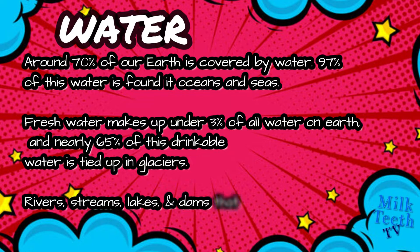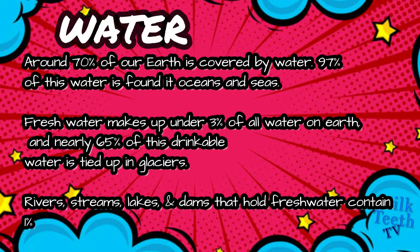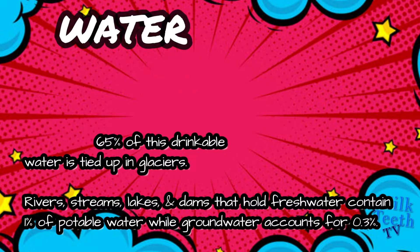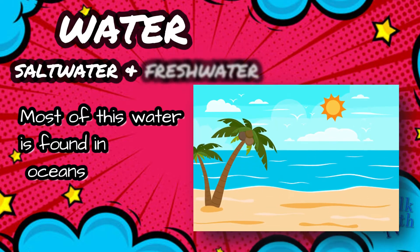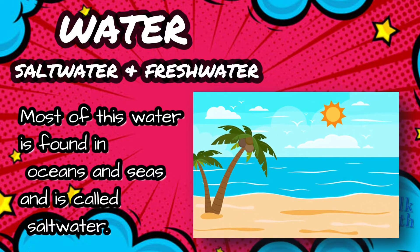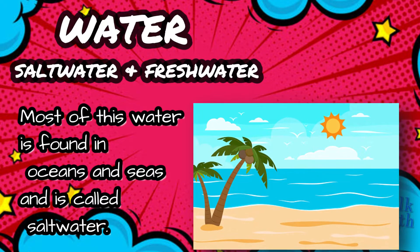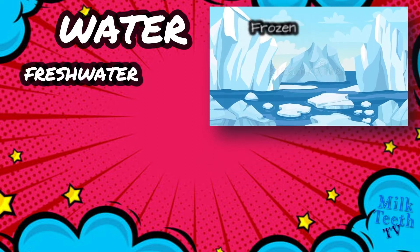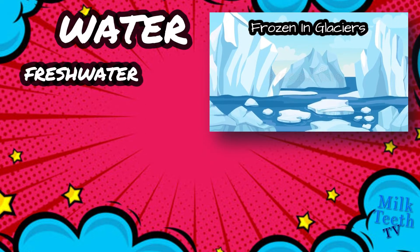Rivers, streams, lakes and dams that hold fresh water contain 1% of potable water, while groundwater accounts for only 0.3%. Most of the water on Earth is found in oceans and seas and is called salt water. Some water is also present in frozen glaciers, which is fresh water.